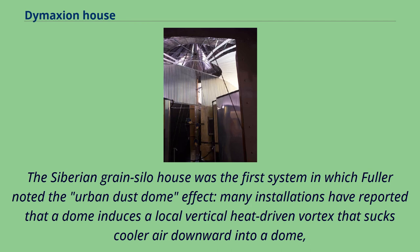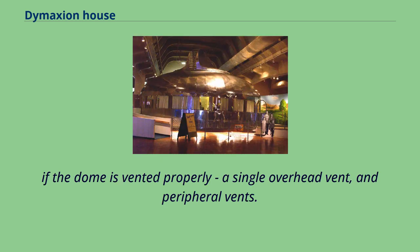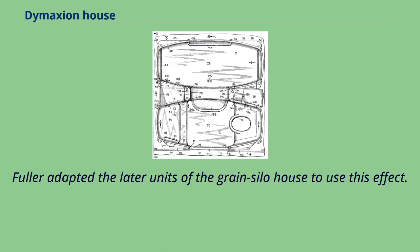The Siberian grain silo house was the first system in which Fuller noted the urban dust dome effect. Many installations have reported that a dome induces a local vertical heat-driven vortex that sucks cooler air downward into a dome. If the dome is vented properly — with a single overhead vent and peripheral vents — Fuller adapted the later units of the grain silo house to use this effect.